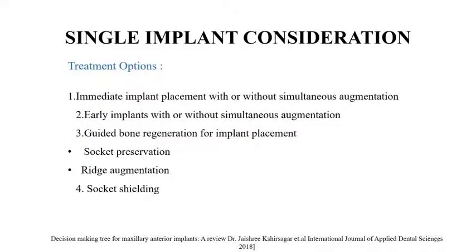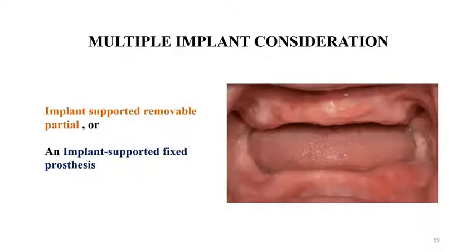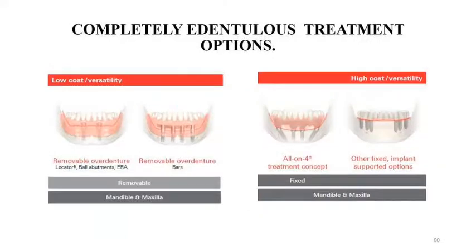For single implant consideration, treatment options include immediate implant placement with or without simultaneous augmentation, early implants with or without simultaneous augmentation, guided bone regeneration, socket preservation, ridge augmentation, and socket shielding. For multiple implant consideration, options include implant-supported removable partial prosthesis or implant-supported fixed prosthesis. For completely edentulous rehabilitation, options include a removable overdenture (RP4 or RP5 — supported entirely by implants or by implants and soft tissue), or fixed options such as the All-on-4 concept introduced by Paulo Maló, or other fixed prostheses with multiple implants.